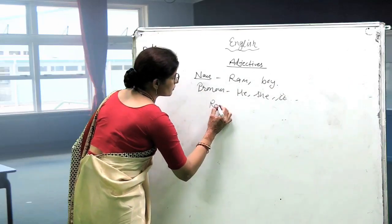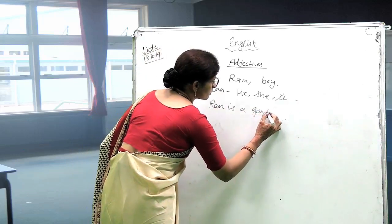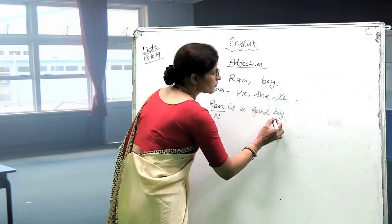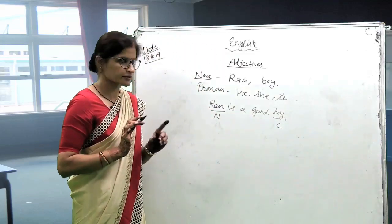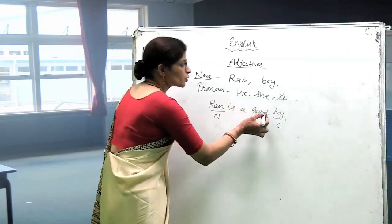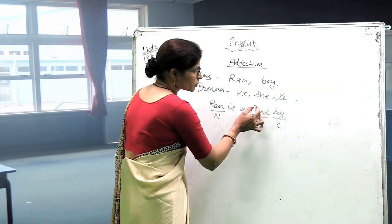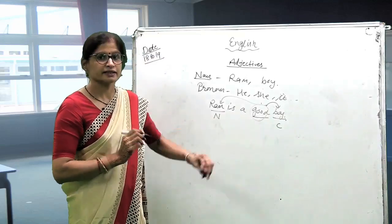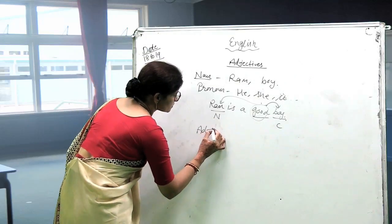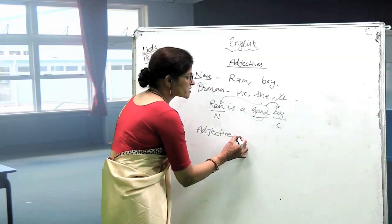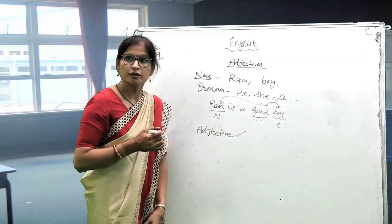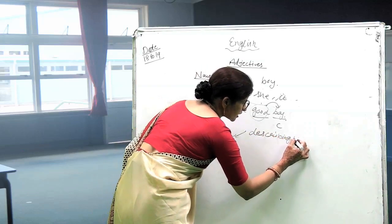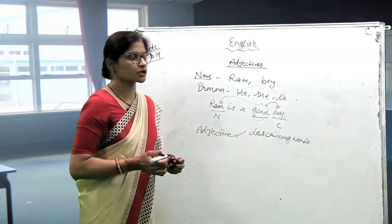If I say Ram is a good boy — Ram is a proper noun and Boy is a common noun, these are nouns. The word 'good' — good describes the noun. So this is an adjective. Adjectives are the words which describe noun or pronoun, so these are called describing words.